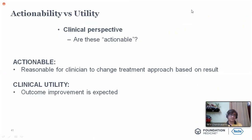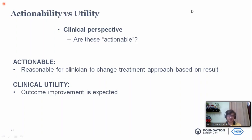What is actionability? What is the clinical utility? Does having a mutation help in choosing a drug, and if we target that mutation, will it be productive? Are all mutations driver mutations, or are some just passenger mutations? Actionability means it is reasonable for the clinician to change the treatment approach based on the result. Clinical utility means an improvement in outcome is expected.